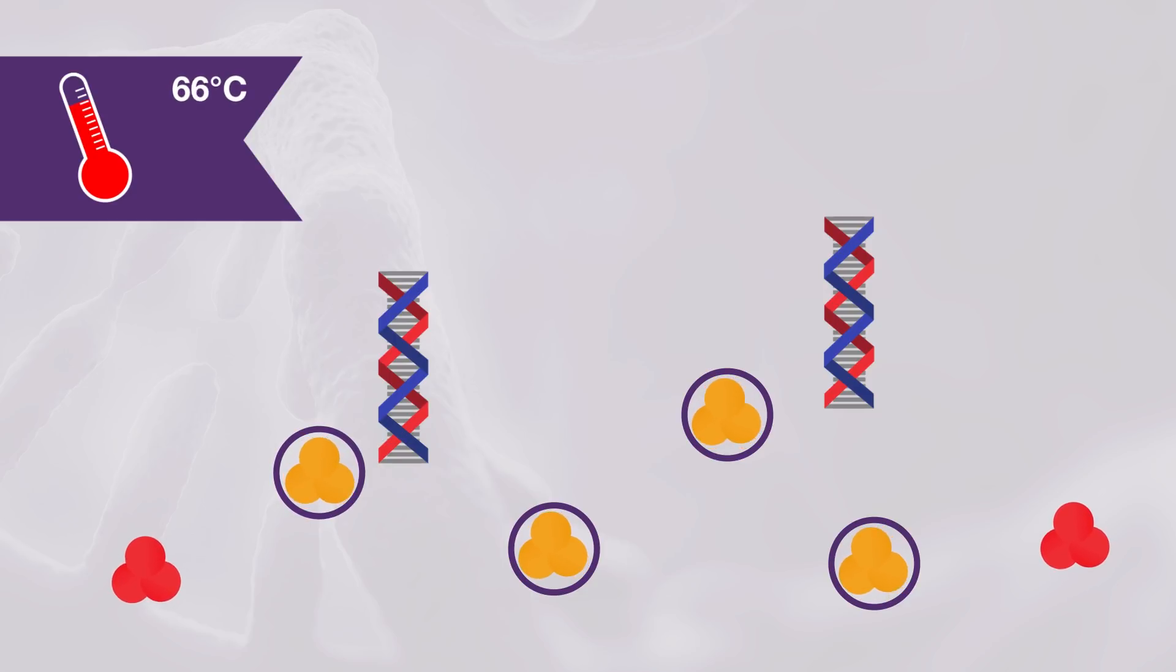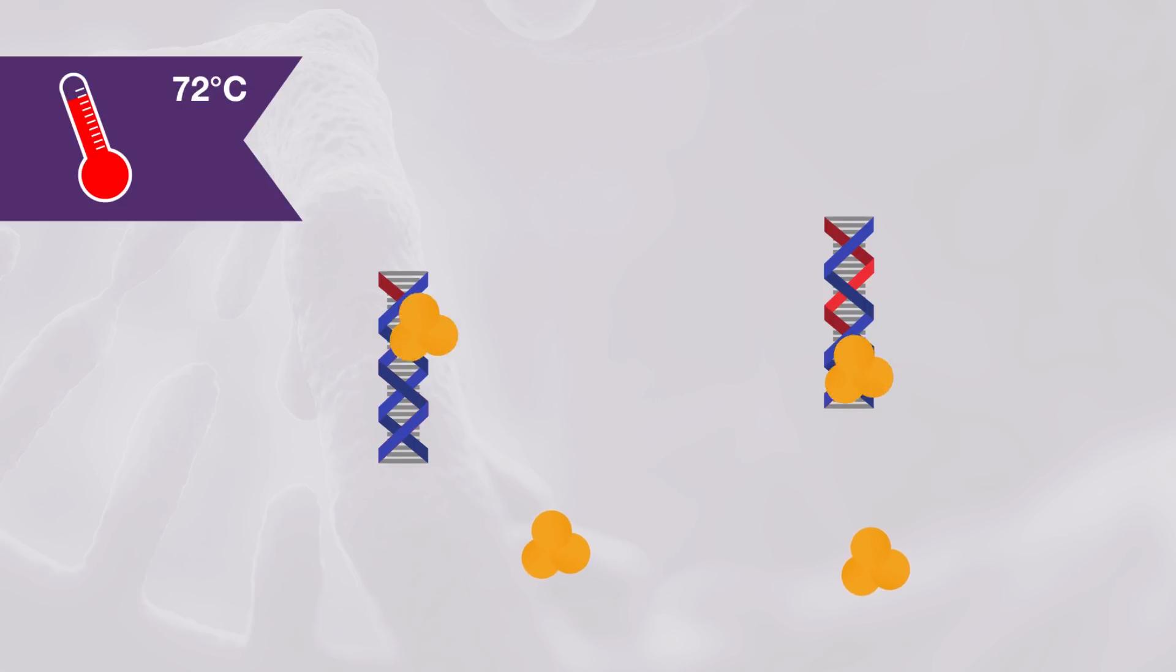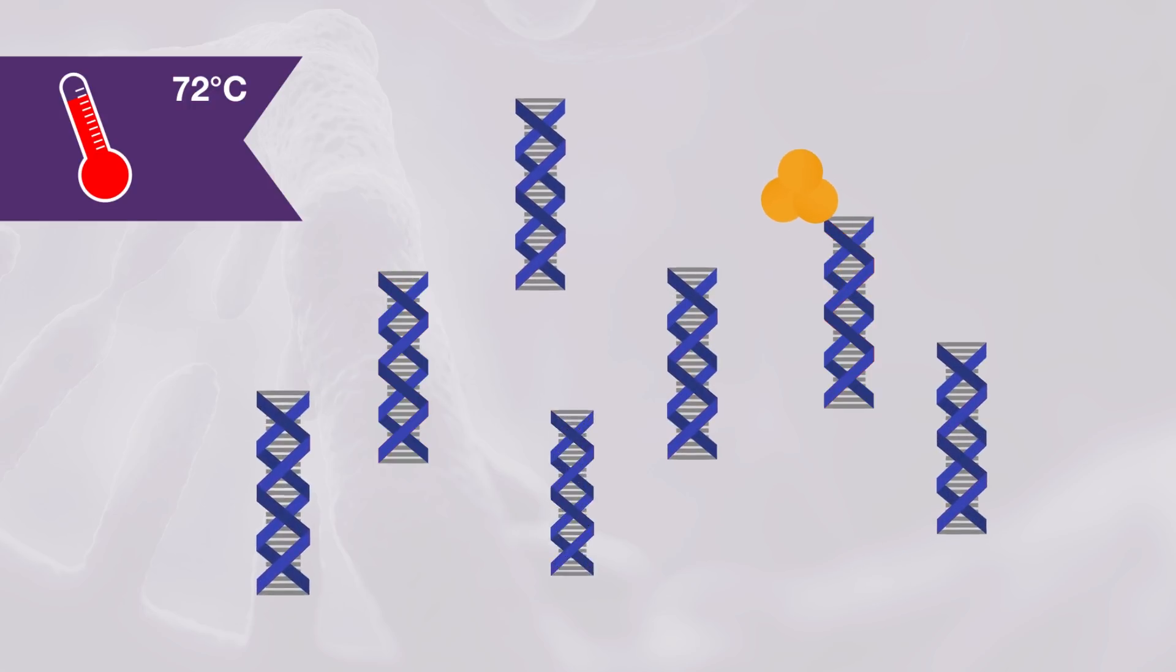During the second hot-start activation phase, the reaction mixtures are heated to 98 degrees Celsius to activate the Platinum SuperFi DNA polymerase and simultaneously inactivate the Superscript 4 reverse transcriptase, allowing highly efficient and specific DNA amplification.